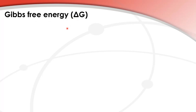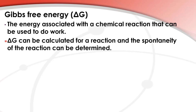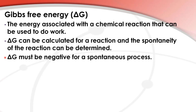Next we look at Gibbs free energy, which is delta G. Gibbs free energy is the energy associated with a chemical reaction that can be used to do work. Delta G can be calculated for a reaction and the spontaneity of the reaction can be determined. Delta G must be negative for a spontaneous process.